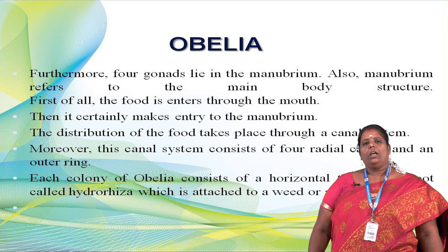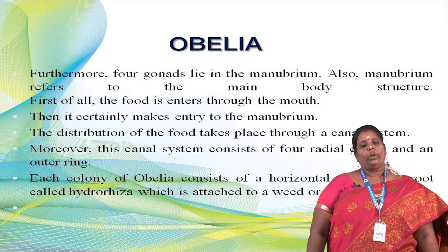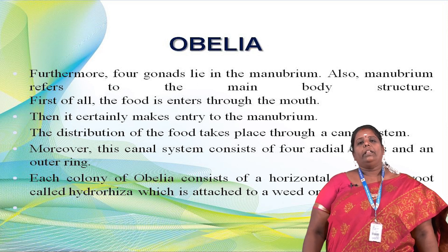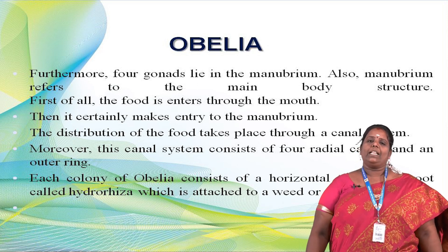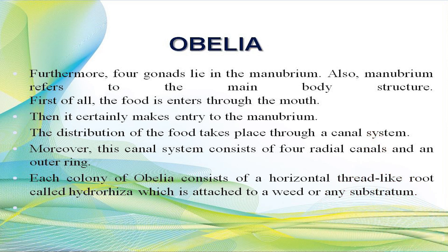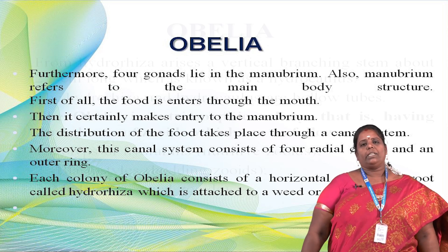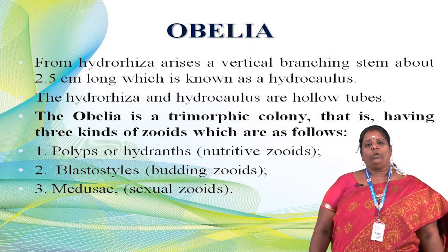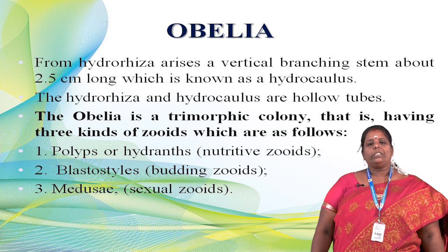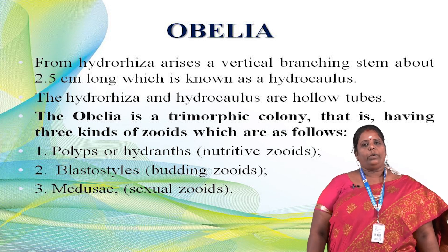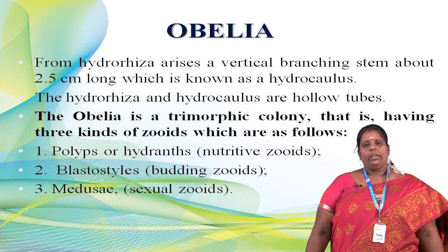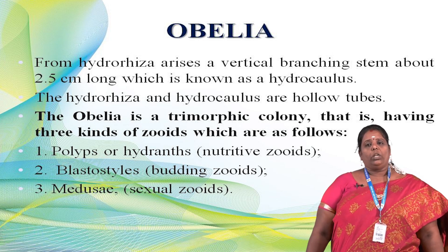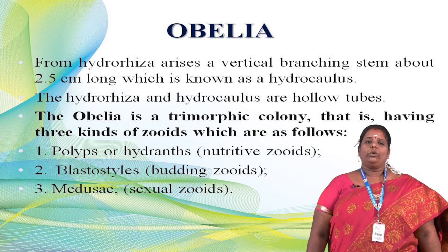The Obelia colony consists of horizontal thread-like roots called the hydrorhiza, which attaches to any substratum such as rocks or shells. The hydrorhiza anchors the animal. From the hydrorhiza arise vertical branches — stem-like structures about 2.5 centimeters long — called the hydrocaulus. The hydrocaulus and hydrorhiza are hollow tubes. Obelia is called a trimorphic colony because it has three kinds of zooids: polyps or hydranths, blastostyles, and medusae.